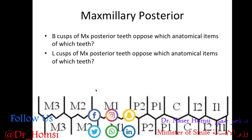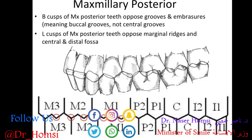Maxillary posterior teeth — two questions here. The buccal cusps of the maxillary posterior teeth oppose which anatomical items of which teeth? The answer: the buccal cusps of the maxillary molars are going to oppose grooves and embrasures — specifically buccal grooves, not central grooves. So we see opposing buccal grooves and in some cases an embrasure followed by buccal grooves.